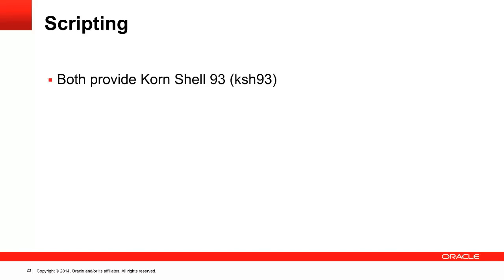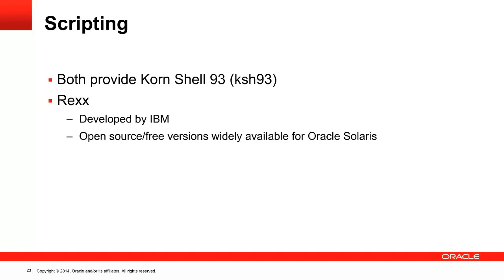One final topic before we close: scripting. You write scripts to manage as many of your day-to-day tasks as practical. AIX and Oracle Solaris both provide the KSH shell 93, and most of your scripts will port to Solaris with minimal effort — the only changes you should need to make are related to variations in script dialect. Many administrators also rely on REXX, another powerful scripting language developed by IBM. While REXX is not supported by Oracle, it's available as open source and known to work well on Oracle Solaris.